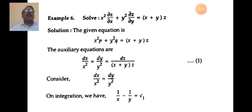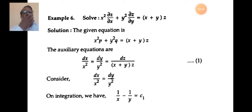The given equation is x²p + y²q = (x + y)z. Write the auxiliary equation: dx/x² = dy/y² = dz/((x+y)z). Observe the auxiliary equation — taking the first and second terms, dx/x² = dy/y², which is easily integrable as a variable separable differential equation.